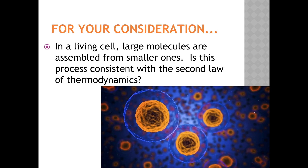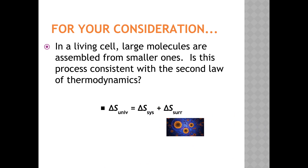Last time we ended with this apparent conundrum to consider. In a living cell, large complex molecules are often assembled from smaller simpler molecules. Is this biological process consistent with the second law of thermodynamics? Of course it is. While the cellular system may lead to a decrease in entropy of the system, the rest of the universe — the surroundings — must have a greater increase in entropy such that the overall entropy change in the universe is greater than zero.